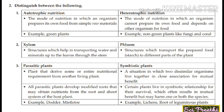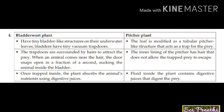Distinguish between parasitic plants and symbiotic plants. Parasitic plants derive some or entire nutritional requirements from another living plant, and develop modified roots to obtain nutrients from the host plant's root and shoot system. Symbiotic plants are two dissimilar organisms living together in close association for mutual benefit. Examples: dodder and mistletoe are parasitic; lichens and roots of leguminous plants are symbiotic.